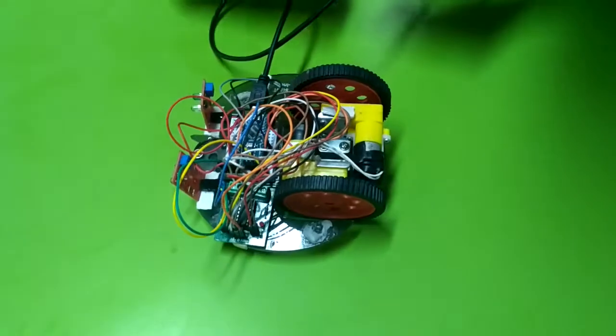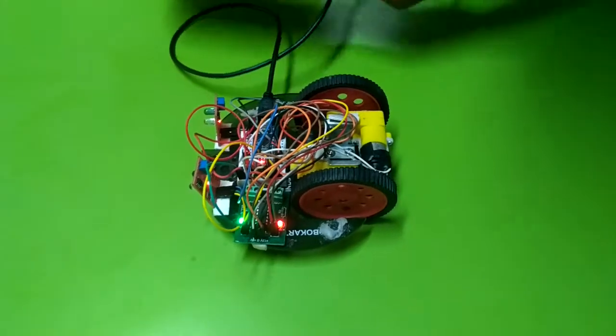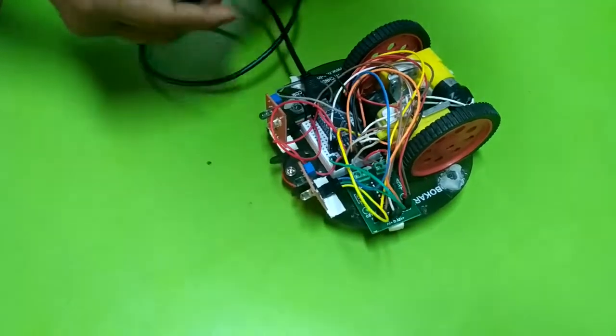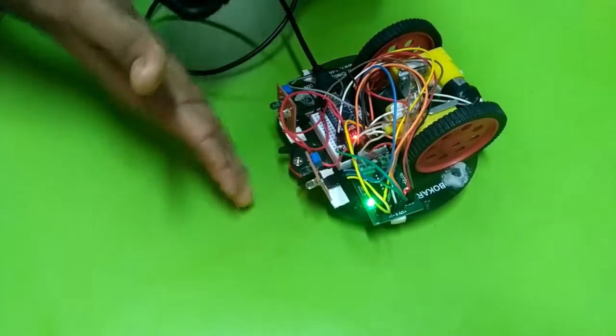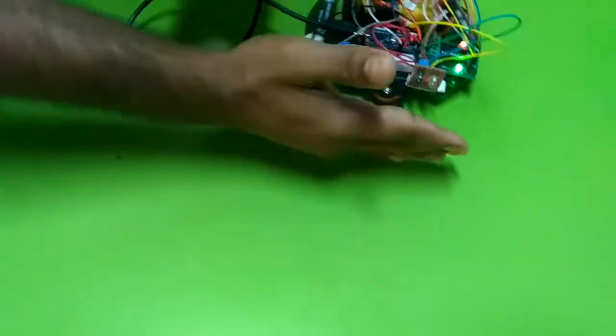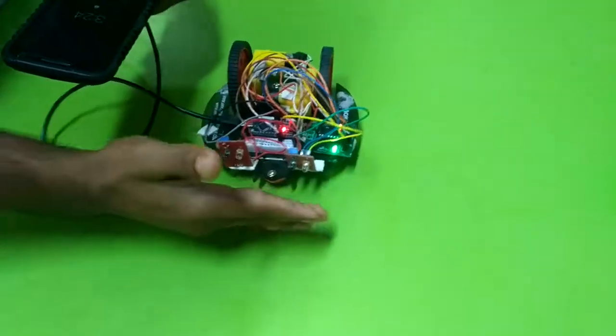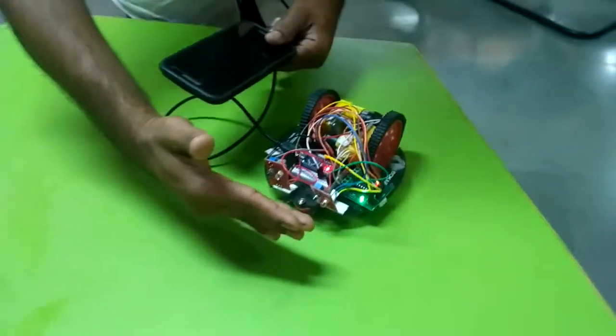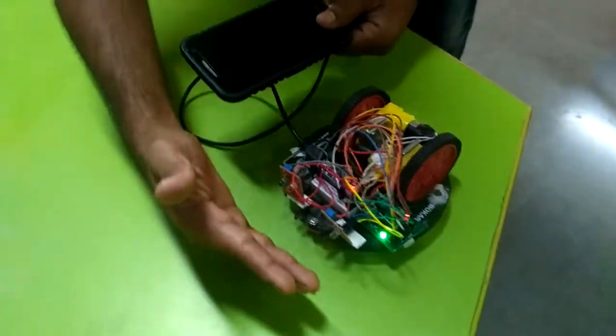Okay, finally, as you can see the working of this object repeller. As you can see that when I will take my hand in front of this robot, it will check that. See, as you can see the working of this object moving away from my hand.